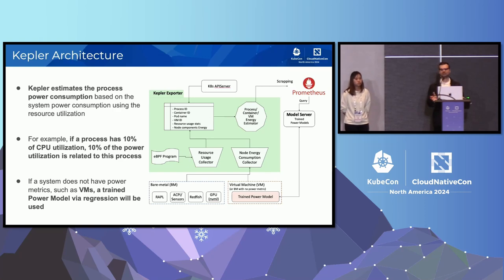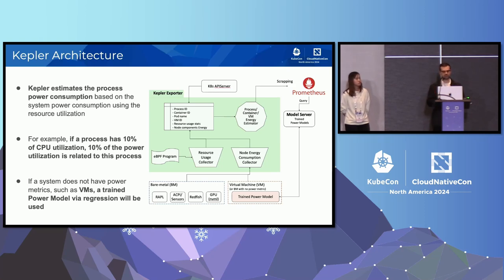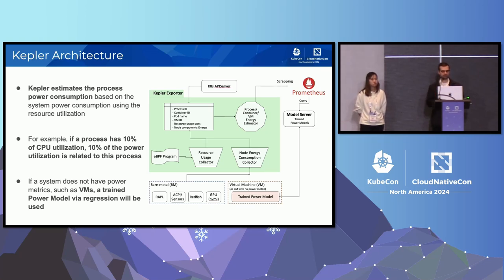The basic assumption to determine the power consumption of a process is something like: if the process is using 10% of the CPU, then 10% of the power consumption is related to this process. It's as simple as that. However, when we go to the trained power model, we have something more complicated working under the hood, but the core assumption is to distribute the power consumption of the components to each process.